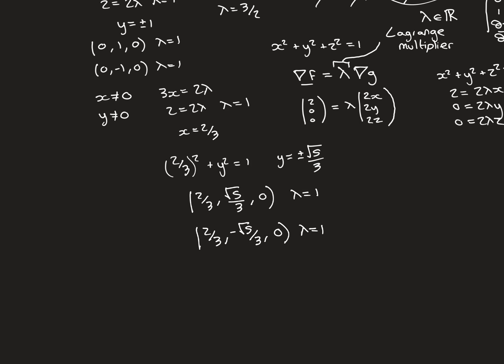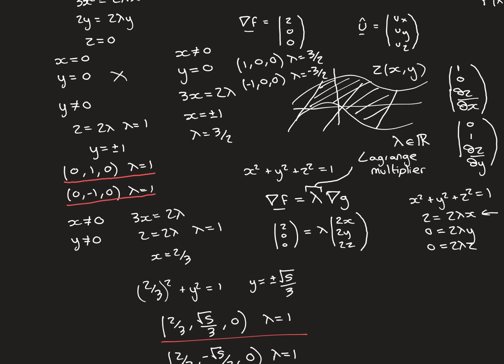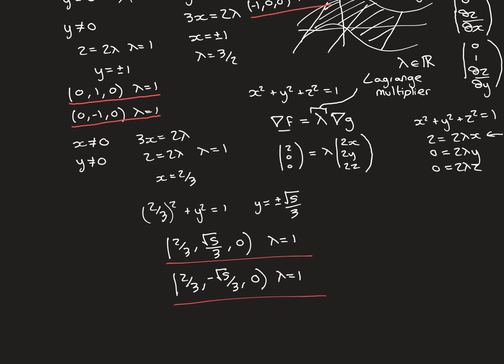We have now solved all the cases and found all six stationary points on the unit sphere: (0, 1, 0), (0, -1, 0), (1, 0, 0), (-1, 0, 0), (2/3, √5/3, 0), and (2/3, -√5/3, 0). Now we just need to find which gives the maximum and which gives the minimum value of f.